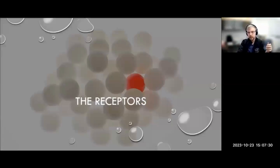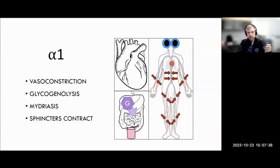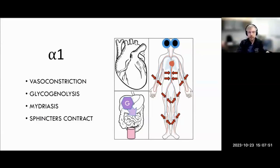The receptors that we're targeting with each of these medications — we'll discuss some of those now to put it all together and understand what we want to achieve in each clinical scenario. Alpha-1 receptors are responsible for vasoconstriction. There are some elements of glyconeogenesis and mydriasis — not something that you would notice clinically, but in a physiology lab this is what you'll see. The most pertinent clinical effects are vasoconstriction and sphincter contraction to a certain degree.